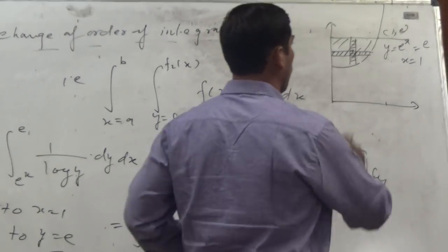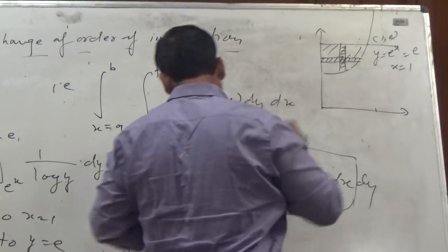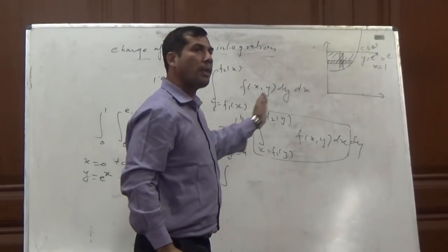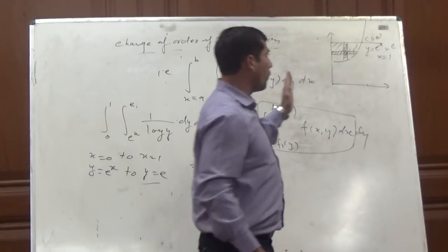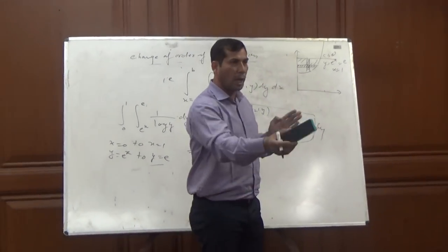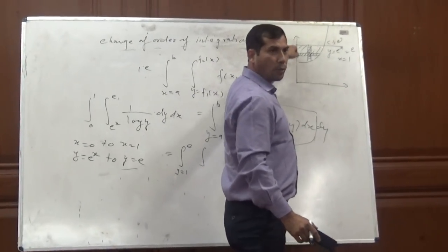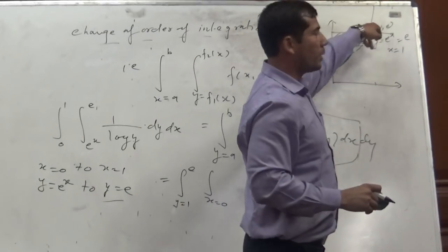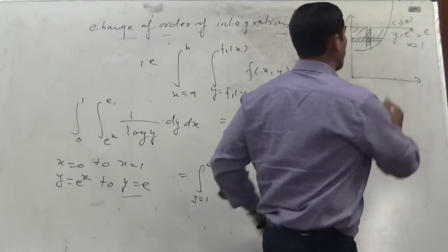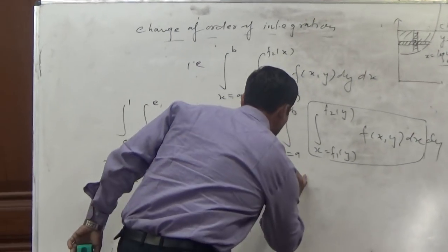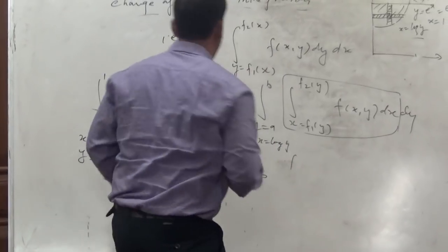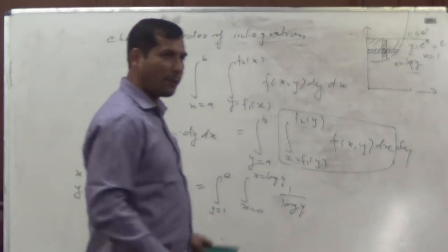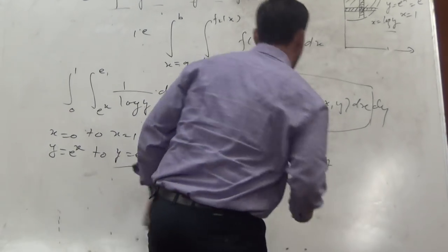With the new strip direction, the constant limits start from y = 1 to y = e for the first integration. For the second integration in x, the lower limit is where the strip starts on the left — which is the line x = 0 — and the upper limit is the curve y = e^x, giving x = log(y). So the new integral has limits: y from 1 to e (outer), x from 0 to log(y) (inner), with the function 1 / log(y), integrating dx then dy.